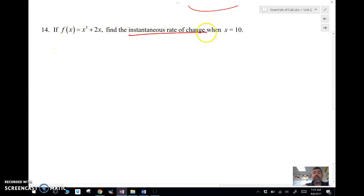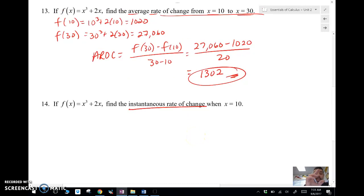So now we want the instantaneous rate of change. So how is that different than the average rate of change? I'm going to do this in a different color here, instantaneous rate of change. We're going to take the derivative, and that's going to be 3x squared plus 2. Now we did that.